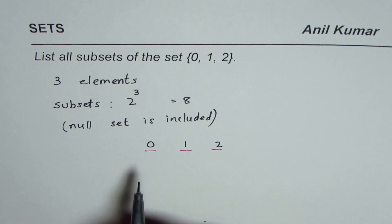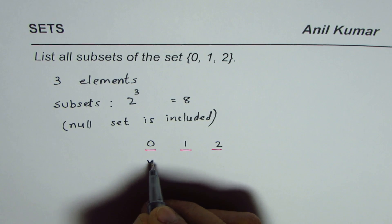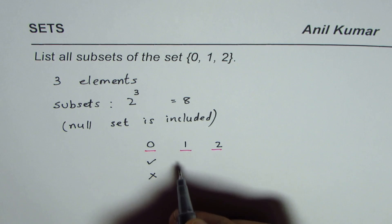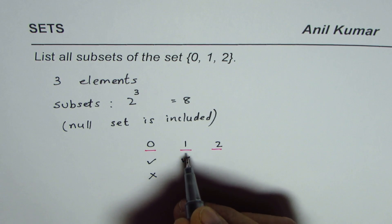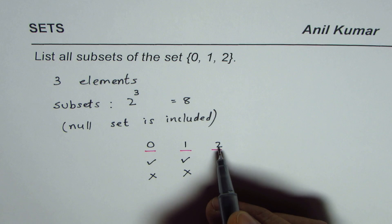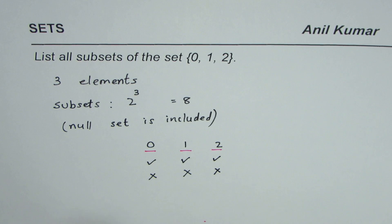The idea is we have two options: to select or not to select. Same with 1—we could select 1 or we may not select it. Same with 2—we could select or not select it. And that gives us, from the counting principles...